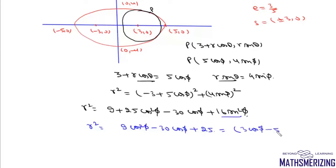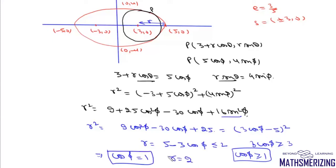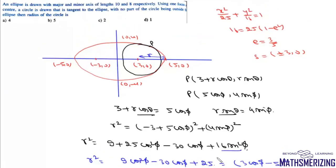This simplifies to r² = (3 cosφ - 5)², so r = 5 - 3 cosφ. Since the circle lies inside the ellipse, r must be ≤ 2 (the distance from focus to nearer vertex is 5 - 3 = 2). This requires 3 cosφ ≥ 3, so cosφ ≥ 1. Since cosφ cannot exceed 1, cosφ = 1 and r = 2. The radius is 2 units — option C.